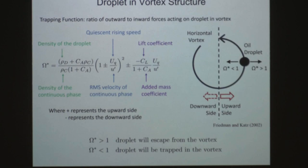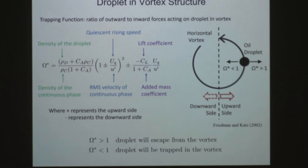In order to determine which droplets stay within this vortex and which ones escape, we used something called a trapping function. Conceptually it's pretty simple: we have a horizontal vortex, and an oil droplet either on the upward side or the downward side. We take a ratio of the outward forces to the inward forces. If omega is greater than one, that droplet will tend to move outward and escape from the vortex.